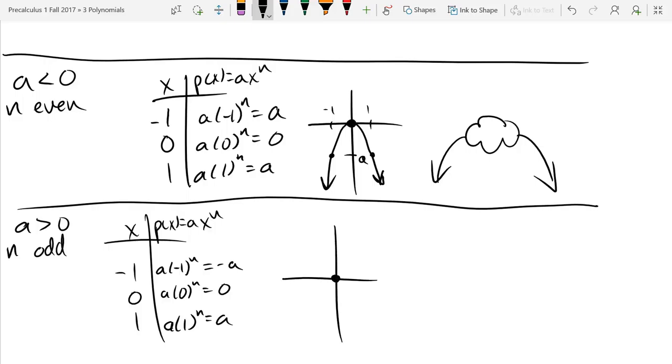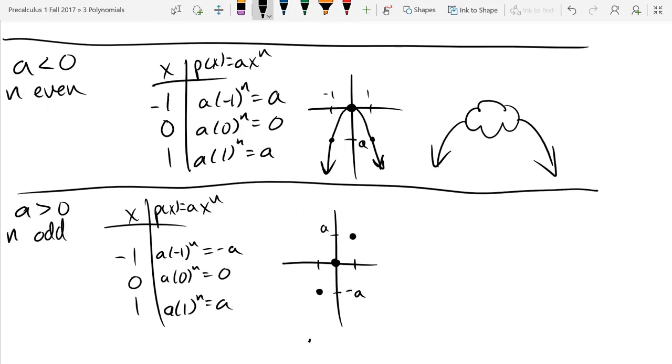So when we graph this, we got the 0, 0 point. Now, I assumed a was positive. So that means a is going to be somewhere up there. We're going to need negative a, which is going to be down there. So we got 1, a and negative 1, negative a. Now, the way these connect together, they don't quite go in a straight line. They have a curve to them. And it's going to look like this. So the end behavior we have for this graph, on the right, we're going up. On the left, we're going down.